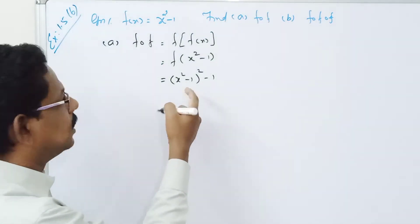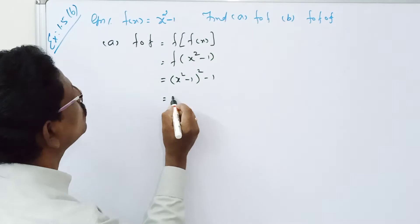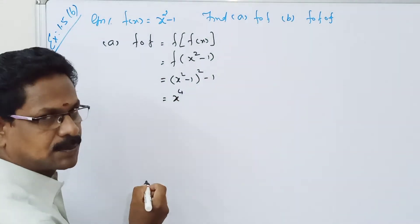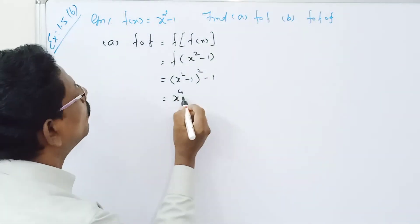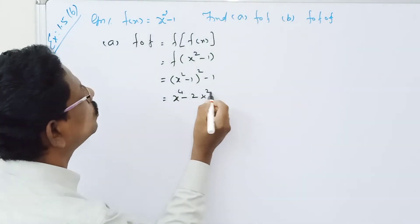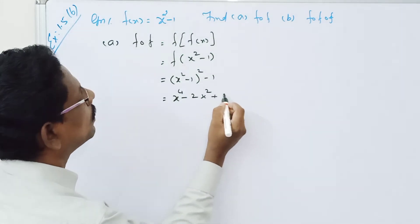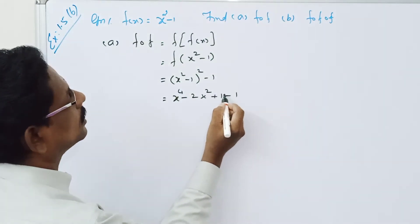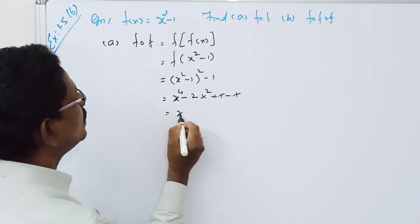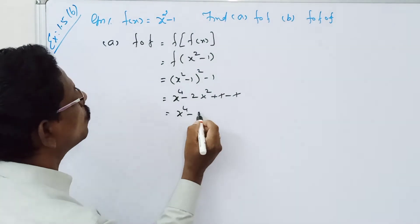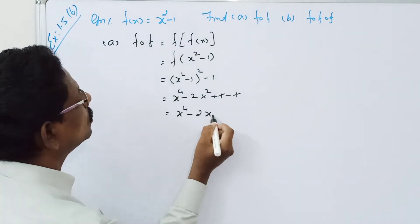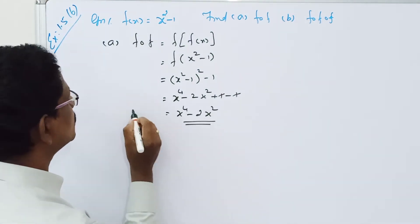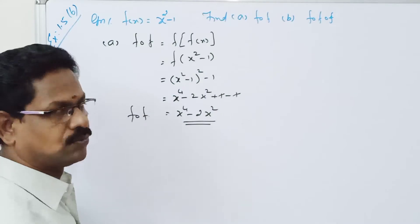Using a minus b whole squared: a squared minus 2ab plus b squared. So x squared whole squared gives x to the power 4, minus 2 times x squared, plus 1 minus 1. The plus 1 and minus 1 cancel, giving x to the power 4 minus 2x squared. This is f composition f.